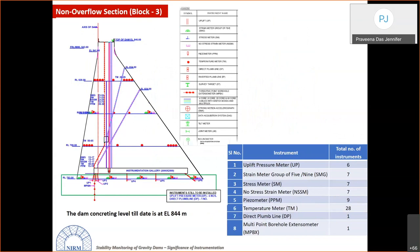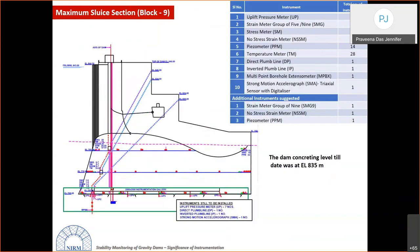At every 15-meter height interval, instruments are installed. At elevation RLS 783, for example, a group of stress-strain meters, piezometers, and temperature meters is installed at both the extreme upstream and downstream portions of the dam. The major instrumentation is concentrated at the foundation level — at the bedrock-to-foundation interface — and near the heel and toe of the dam.